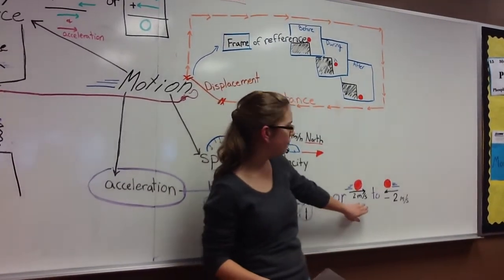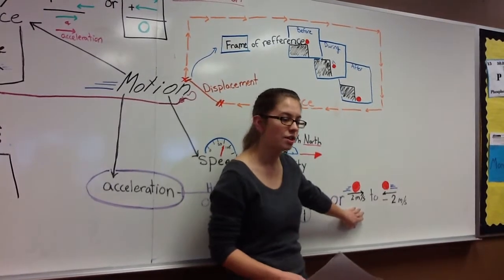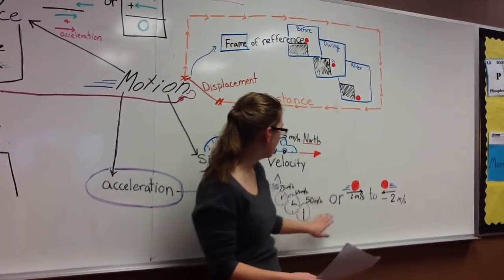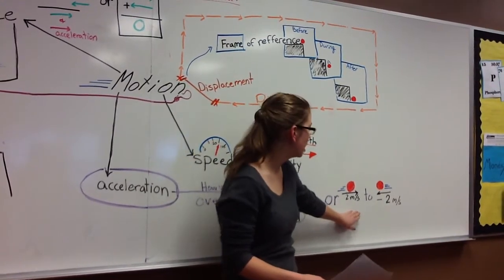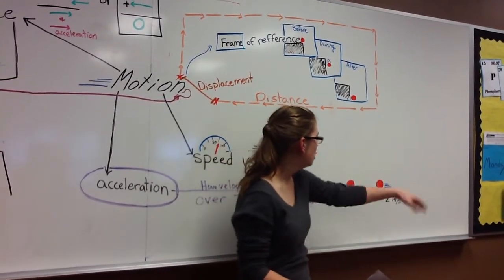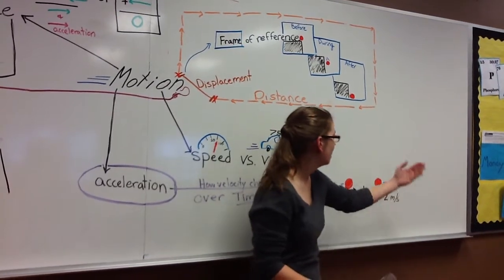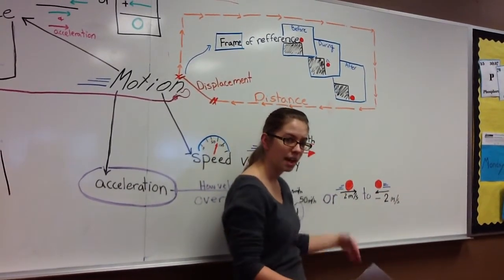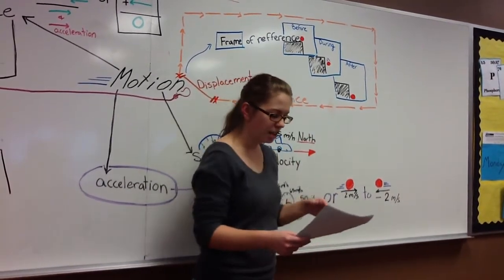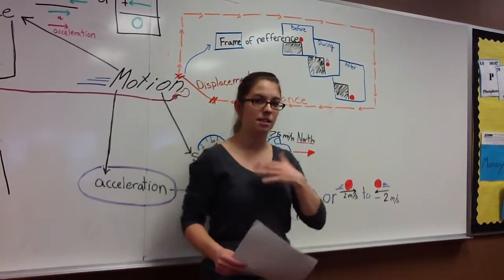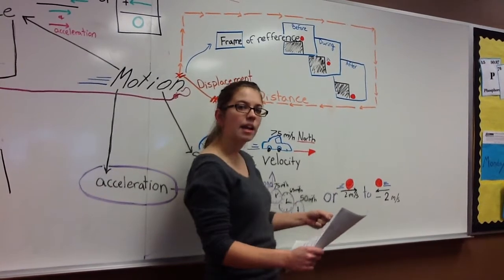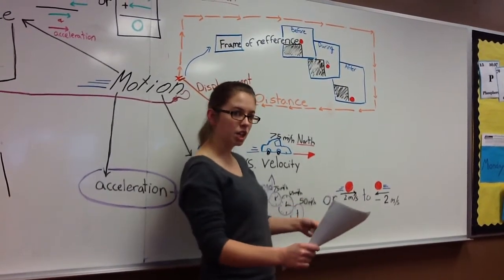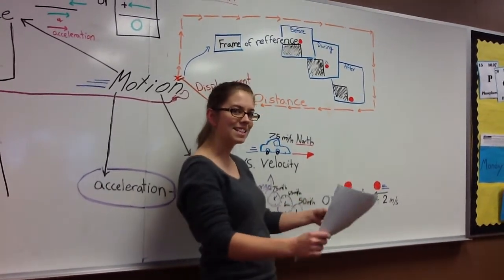Also, if there's a change in direction, there's a change in velocity. So, if there's a change in speed or a change in direction, your velocity has changed. You can see here, the ball is rolling 2 meters per second forward, and then it's rolling backwards 2 meters per second. And our velocity has changed. In physics, this is an important thing to remember. Braking to slow down is also an acceleration. It's considered a negative acceleration.